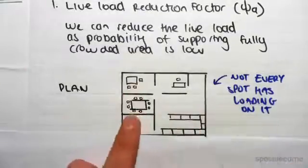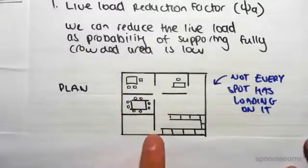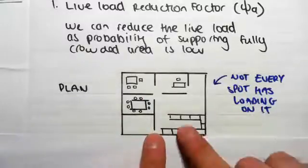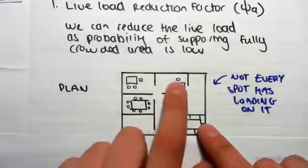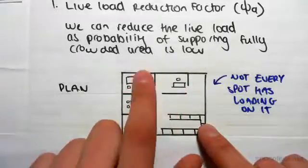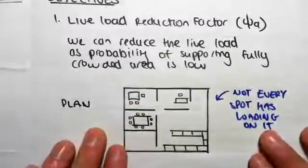we have some desks, it might be a kitchen, something like this, a typical floor plan. Not every spot has loading on it in terms of live loading, right? There's a table there but there's nothing else filling this room, there's a table there and some chairs but there's nothing else filling the rest of the room. So what